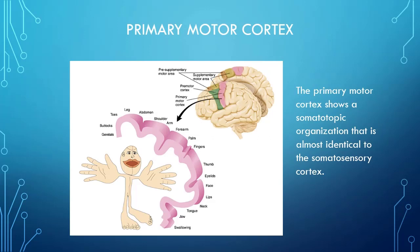The primary motor cortex shows somatotopic organization. 'Soma' means body and 'topo' means map, so we have a map of the body. If you remember our ugly little friend the homunculus, we have one of these for both the sensory and the motor system. The homunculus represents spatially how much cortical area we devote to certain body parts. High sensitivity areas like the hands have more space, and low sensitivity areas like the legs have lower space.